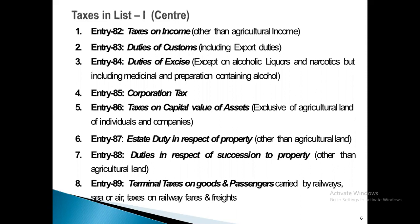Taxes in List 1 of the Seventh Schedule — taxation power of the central government: Entry 82 covers taxes on income other than agricultural income. Entry 83 covers duties of customs including export duty. Entry 84 covers duties of excise except on alcoholic liquor and narcotics, but including medicinal preparations containing alcohol. Entry 85 covers corporation tax.